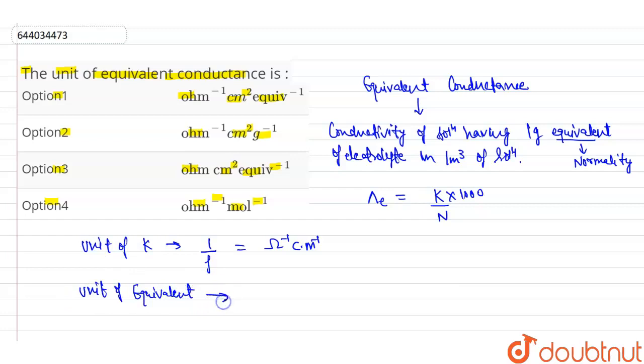The unit of equivalent mass is equivalent per centimeter cube. Now we can write the unit of conductivity is per ohm per centimeter, and the unit of equivalent mass, otherwise normality, is equivalent per centimeter cube. Now solving, we get per ohm centimeter square per equivalent.